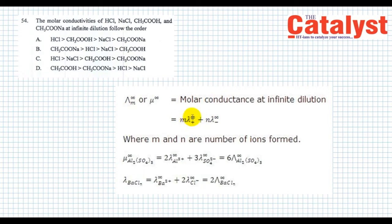For example, if m and n are number of ions, then aluminum sulfate would be having 2×Al³⁺(infinite dilution) + 3×SO₄²⁻(infinite dilution), and BaCl₂ will be having Ba²⁺(λ∞) + 2×Cl⁻(λ∞).